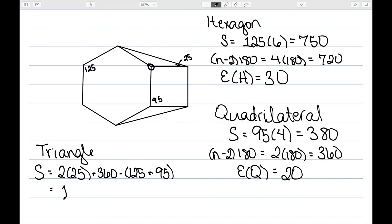This gives me an angle sum of 190. So the excess of my triangles are 190 minus 180, which is 10.